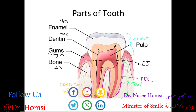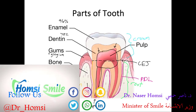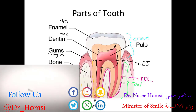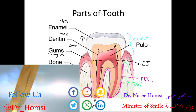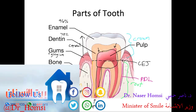One other structure: the tip of the root is called the apex. Regarding directional terms, if something is located toward the apex we call that direction apical, and if we're moving toward the top of the crown we call that direction coronal.